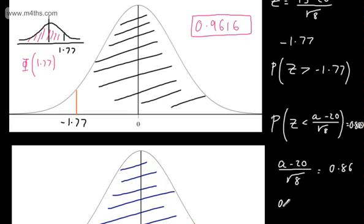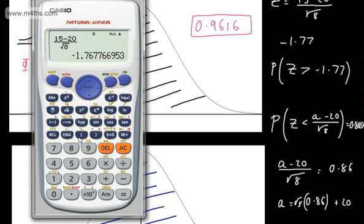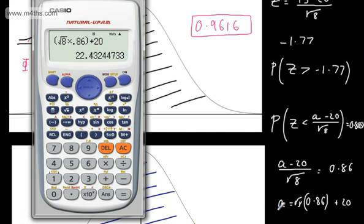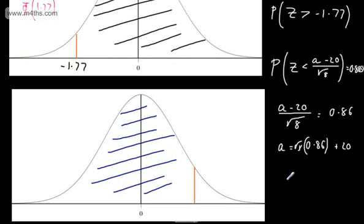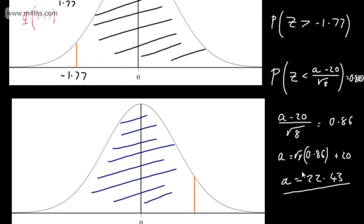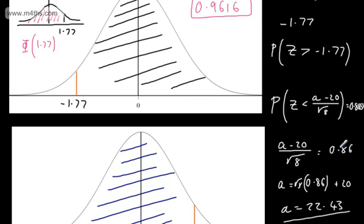To find A, we multiply both sides by root 8 and add 20: A equals 0.86 times root 8 plus 20. Using a calculator, that gives 22.43, correct to two decimal places. So A equals 22.43. This time we worked backwards: given the area, we found the corresponding z-value from the table and solved for A.